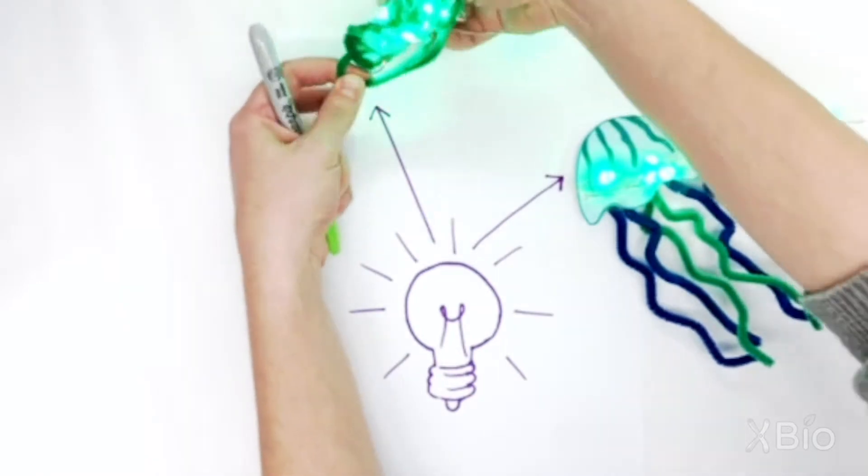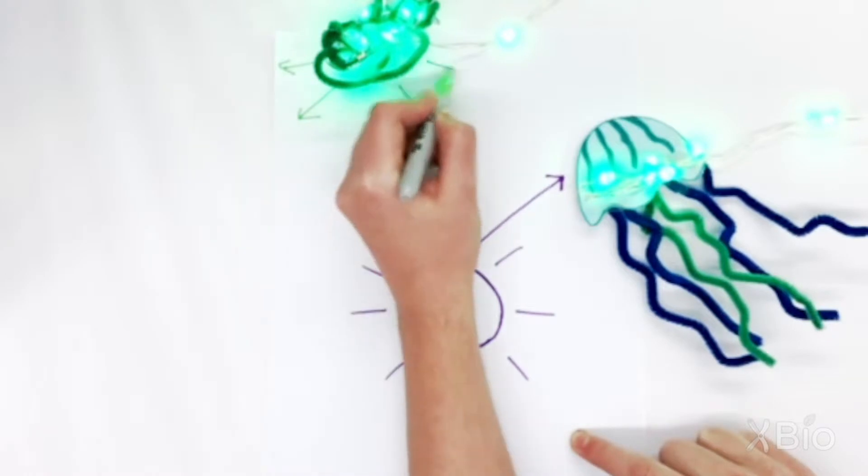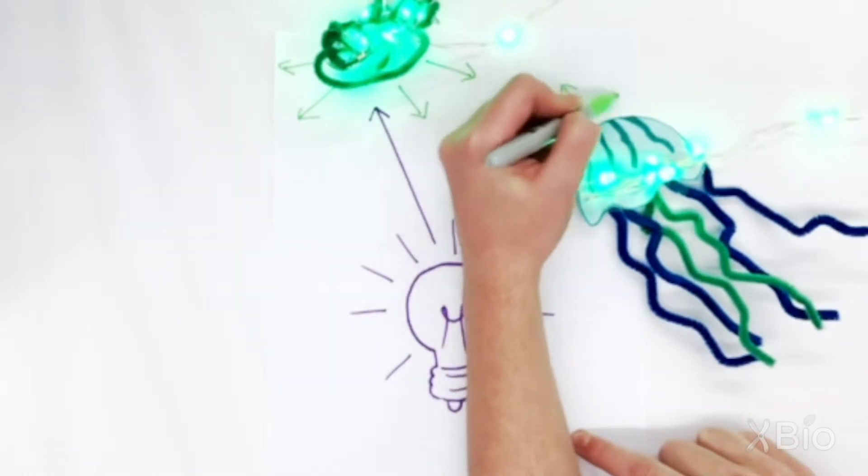changes shape when hit by the right color of light. This change in structure makes GFP fluoresce. It absorbs ultraviolet light and shines out green light.